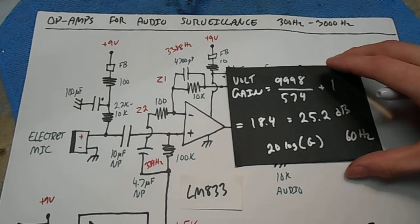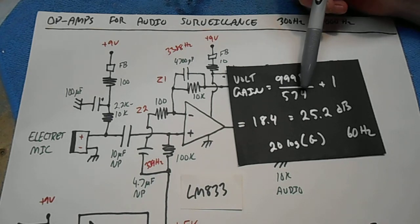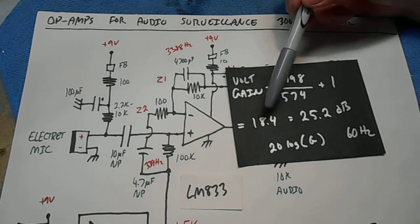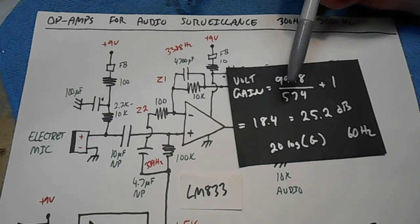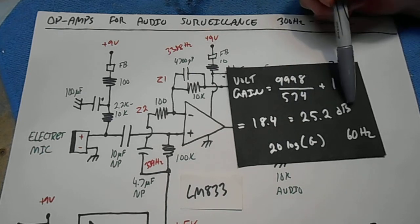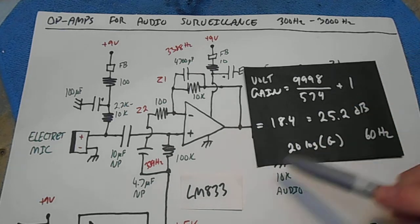Now, the voltage gain. We take the 9,998 ohms divided by the 574 plus the 1, comes out to 18.4. And to convert that to decibels, we take the log, base 10, multiply it by 20, comes to 25.2 dB. So this op amp will provide 25 dB gain at 60 hertz.